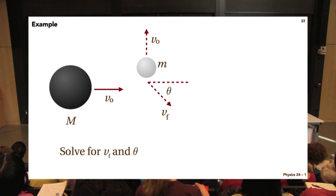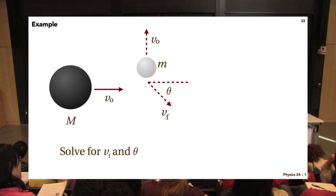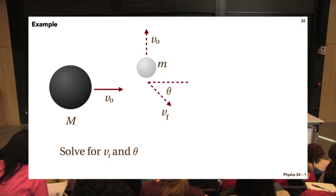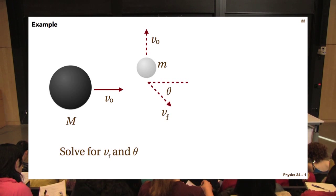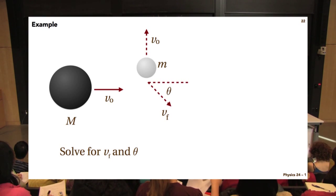But this is what happens after the collision. So after the collision, the pin goes straight up and the bowling ball goes off in some direction indicated by angle theta with respect to its initial incident direction. And we're supposed to solve for v final and for theta.